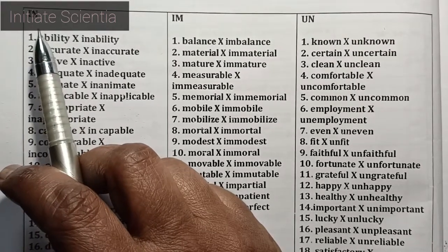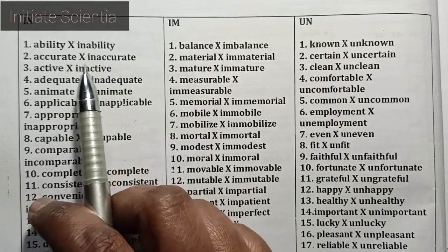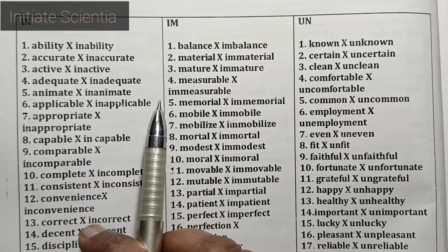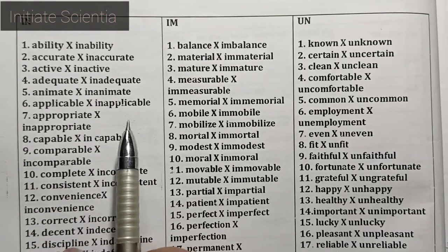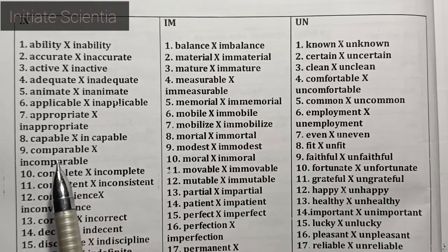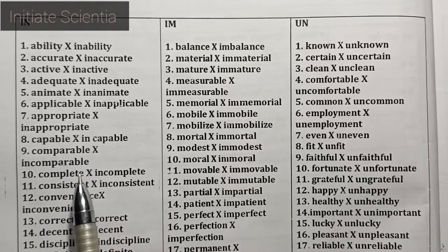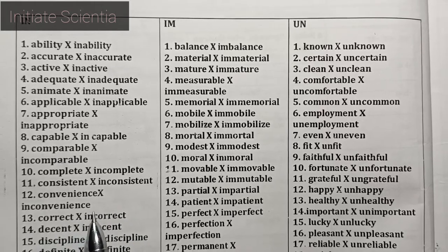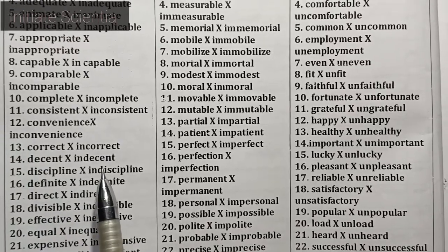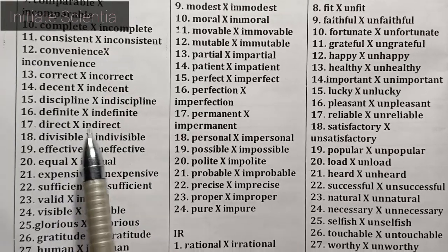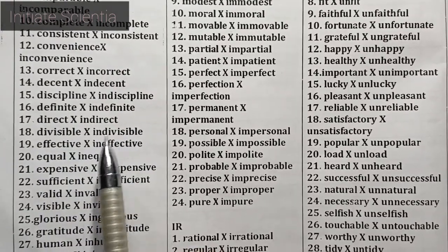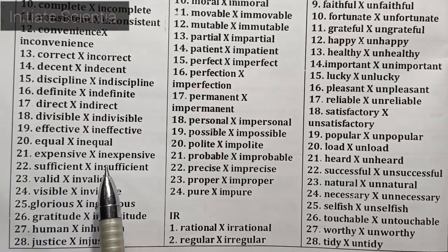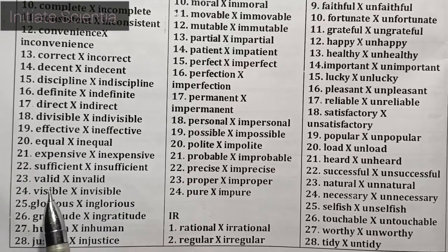Words with the IN prefix: ability – inability, accurate – inaccurate, active – inactive, adequate – inadequate, animate – inanimate, applicable – inapplicable, appropriate – inappropriate, capable – incapable, comparable – incomparable, complete – incomplete, consistent – inconsistent, convenience – inconvenience, correct – incorrect, decent – indecent.